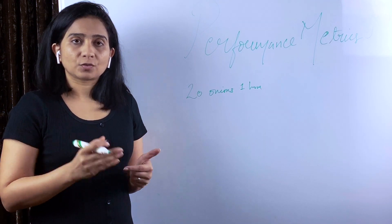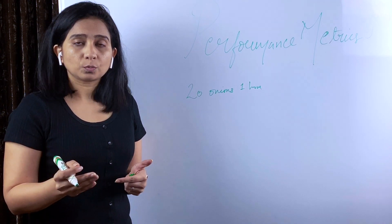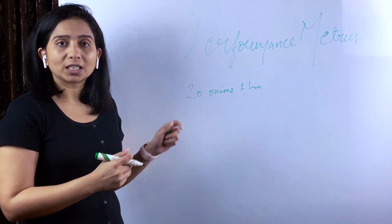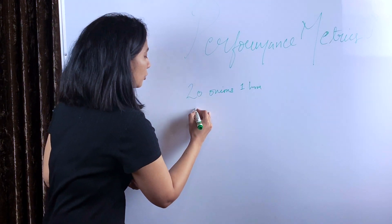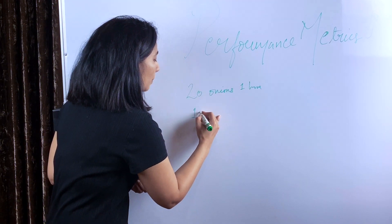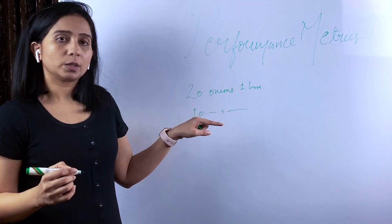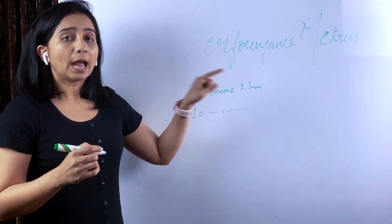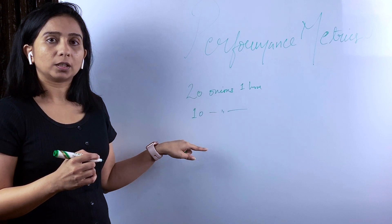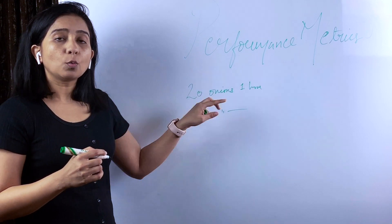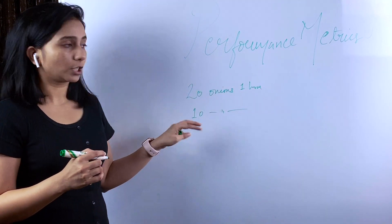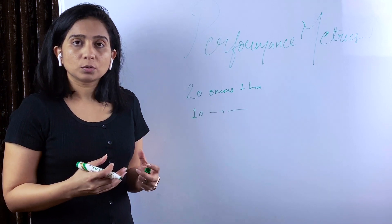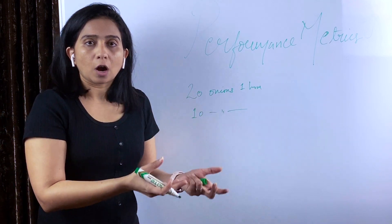However, if someone is relatively new and has not much experience chopping onions that fast, and that person is able to chop 10 onions in one hour, your throughput is 20 and theirs is 10. You have double the throughput because in the same amount of time, you are able to produce more output of work.